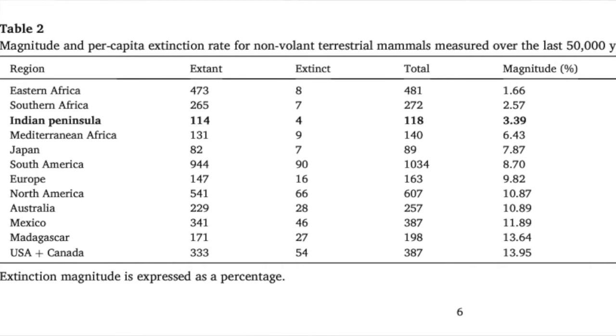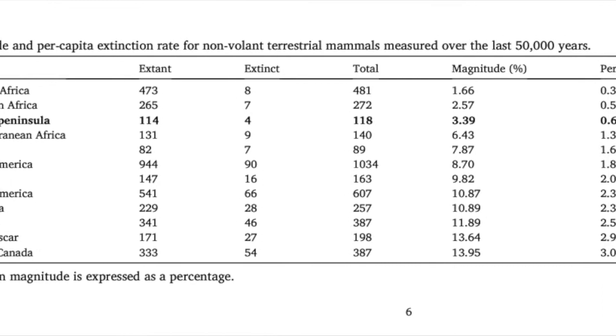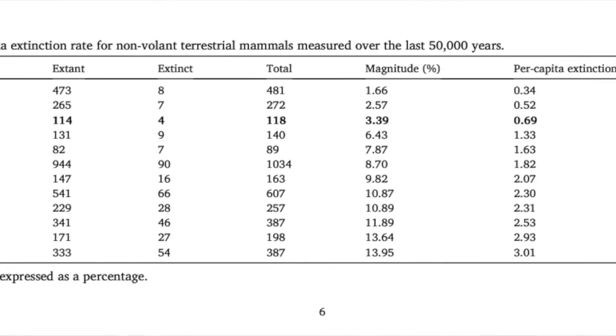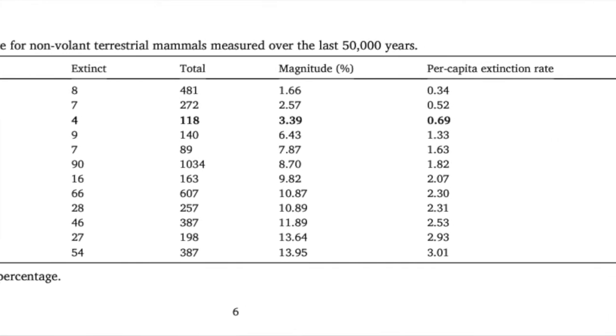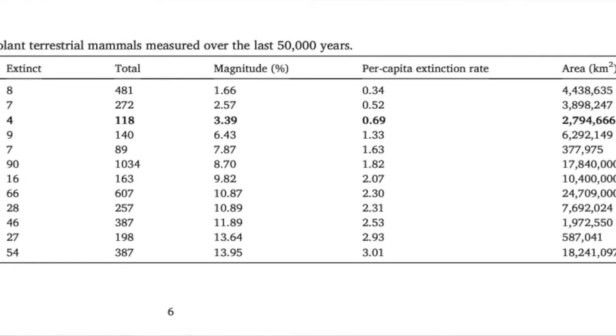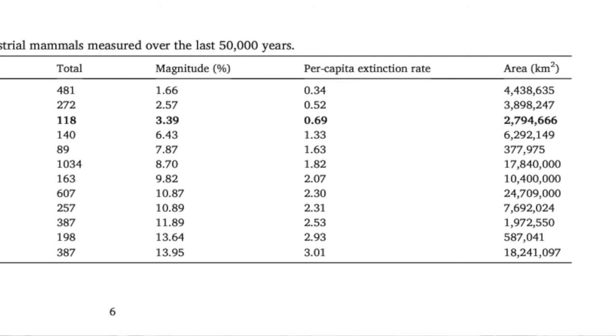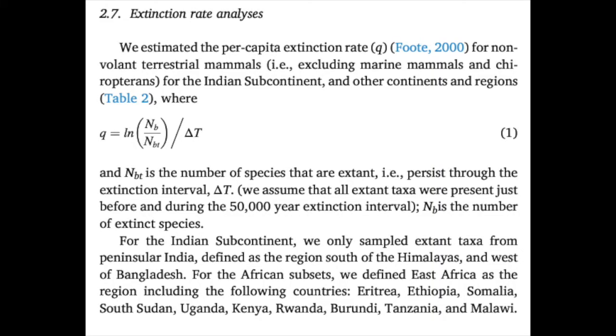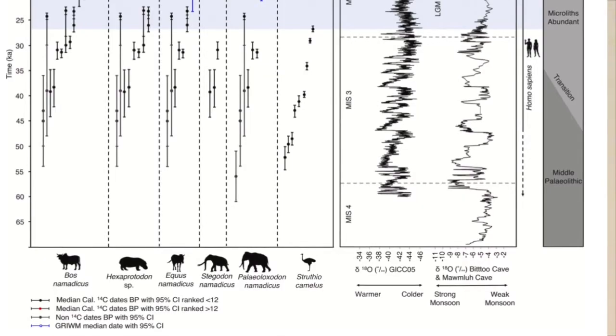The paper includes a table of extinction per capita. The per capita extinction rate is a ratio of the species that survived through the extinction interval divided by the total number of species that were there — it's a proportional extinction standardized by the amount of time, in this case about 50,000 years. Rates can't be compared unless they're standardized by time.